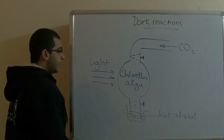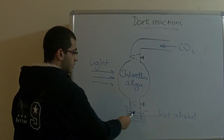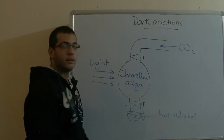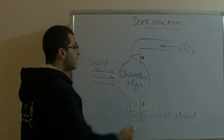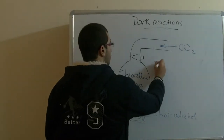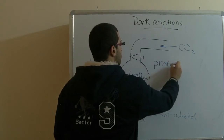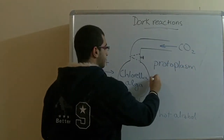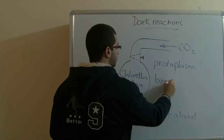He let the chlorella algae pass through the hot alcohol to kill the protoplasm by stopping its biochemical reactions.